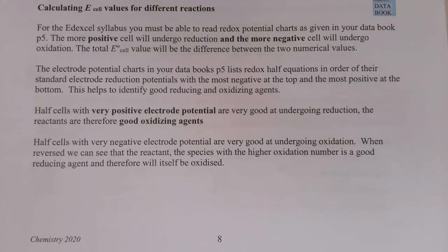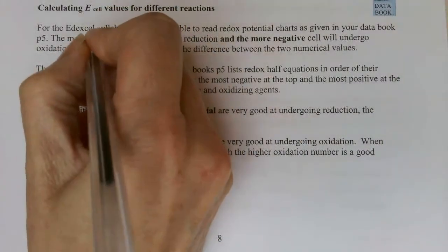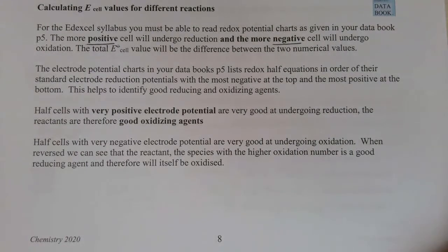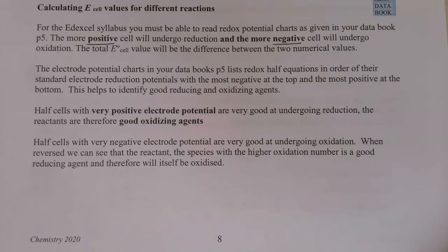To summarise: the more positive cell will undergo reduction and the more negative cell will undergo oxidation. We calculate the E-cell value as the difference between the two numerical values. Half cells with very positive electrode potentials are very good at undergoing reduction, which makes them very good oxidising agents. Conversely, a very negative electrode potential means the equilibrium lies far to the left, so they are good at undergoing oxidation — they are the reducing agent. Zinc, for example, is a very powerful reducing agent because it very easily loses electrons.